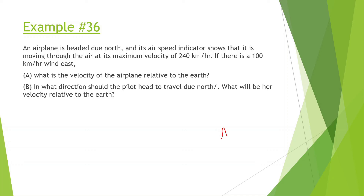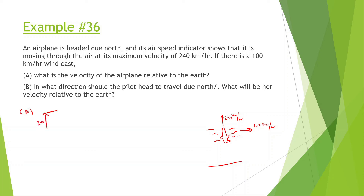So even though through the air this airplane is going 240 kilometers per hour north, we know that relative to the earth it's also getting dragged by the wind — the wind is pushing it to the east at 100 kilometers per hour. So from the earth's perspective, for part A, we're going to use the Pythagorean theorem with 240 and 100 to find the resultant velocity and the angle.